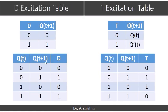Next comes the D excitation table. The D function table is given like this: when D is 0, Q(t+1) equals 0; when D is 1, Q(t+1) equals 1. It is very simple to get the D excitation table — whatever value Q(t+1) has, that value is given to D irrespective of Q(t). So when Q(t+1) is 0, D will be 0, and when it is 1, D will be 1.